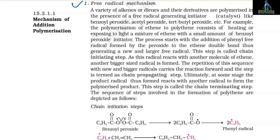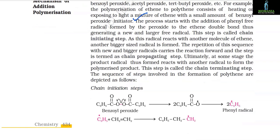For example, the polymerization of ethene to polythene consists of heating or exposing to light a mixture of ethene with a small amount of benzoyl peroxide initiator. The process starts with the addition of a phenyl free radical (formed by the peroxide) to the ethene double bond, thus generating a new and larger free radical. This step is called the chain initiating step.